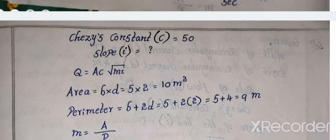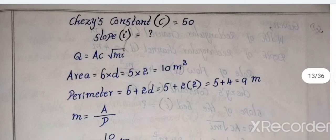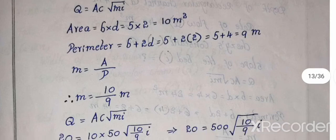M is A by P. M is A by P, i is slope. So area calculation, Chezy's constant first. Area A equal to B into D. B width of the section, D depth of the section. So width is 5, depth is 2, 5 into 2, 10 meter square. Next perimeter, perimeter calculation, so 9 meters.